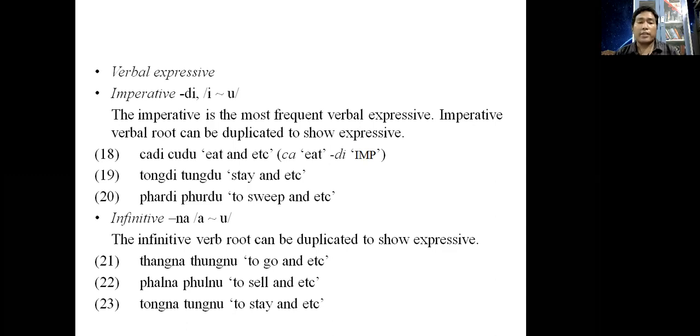And we have infinitive na where a changes to u. The infinitive verb root can be reduplicated to show expressive. Examples 21 to 23: thangna thungnu 'to go and etc.', phalna phulnu 'to sell and etc.', and tongna tongnu 'to stay and etc.'